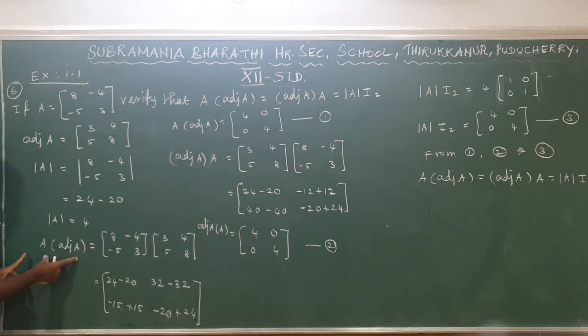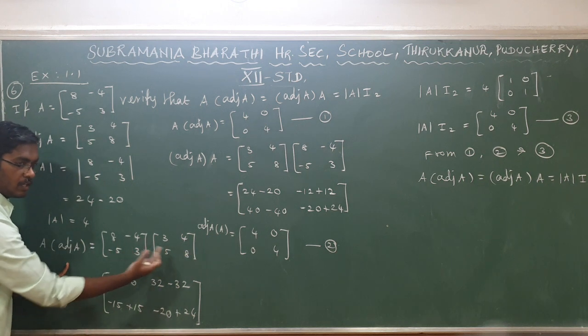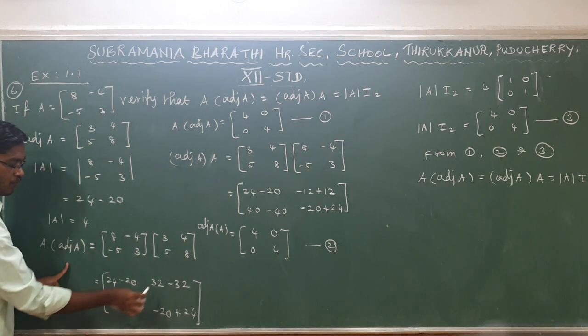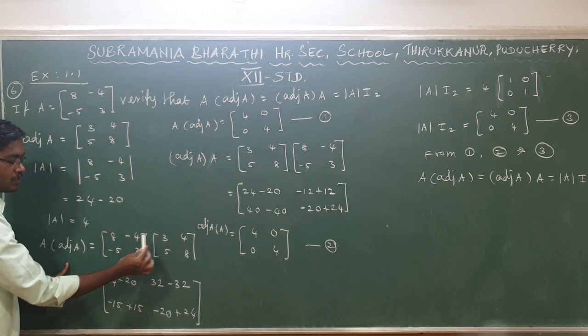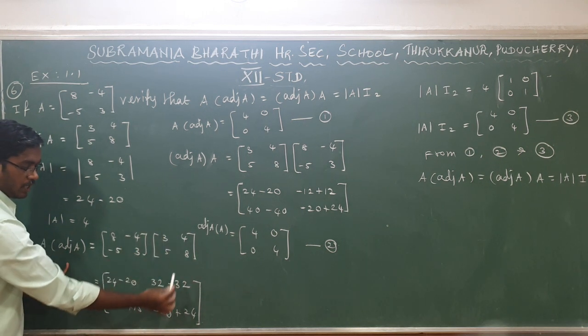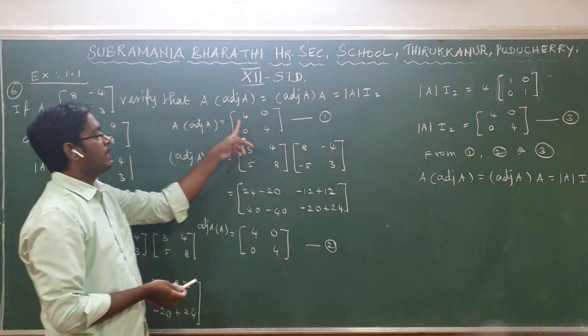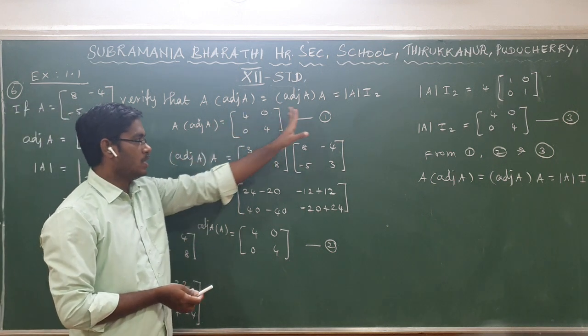A into adjoint of A. We multiply the two matrices. First row first column, then second row first column, then first row second column, second row second column. This gives us [4, 0; 0, 4]. This is the first part.